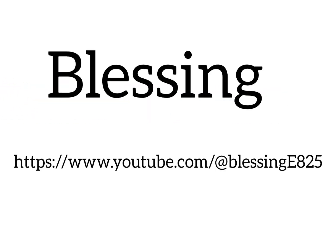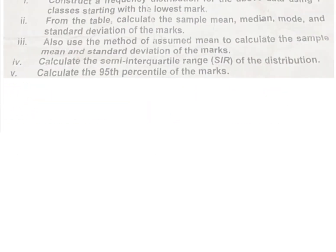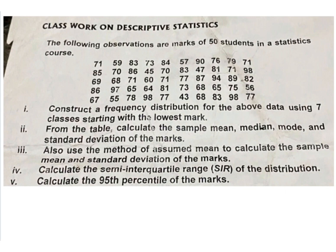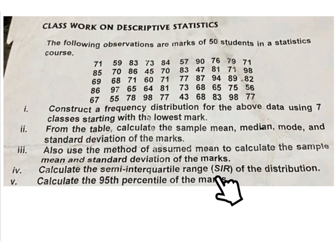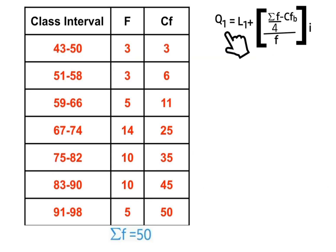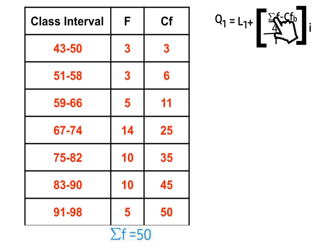Welcome back to my tutorial, it's your amazing tutor Blessing. This is the continuation of the previous video where we're expected to calculate the semi-interquartile range of the distribution. The formula to calculate the first quartile is: L1 plus summation f over 4 minus cumulative frequency before the first quartile class...